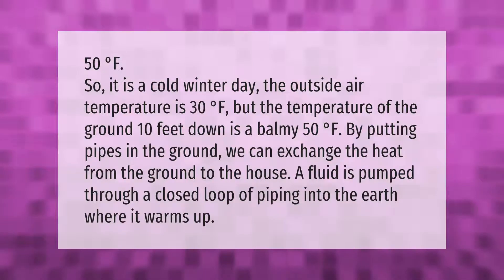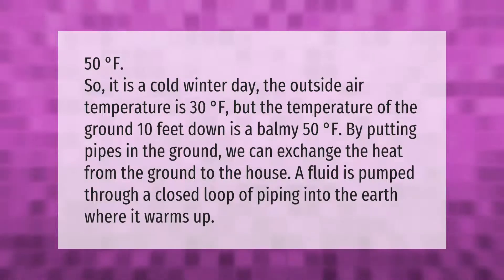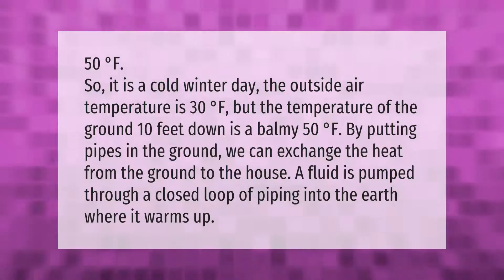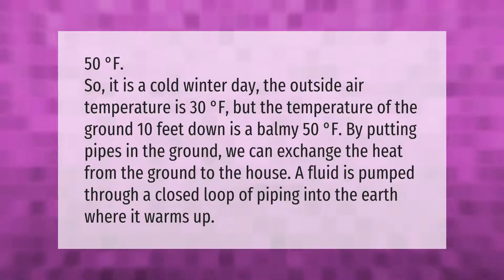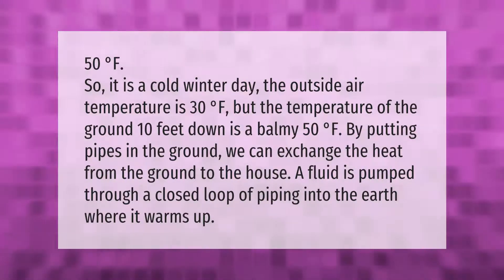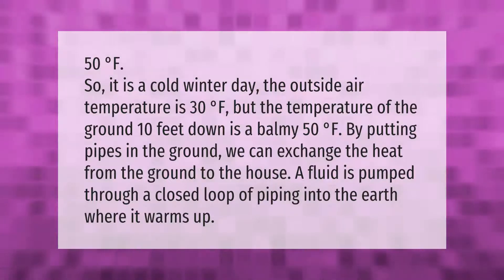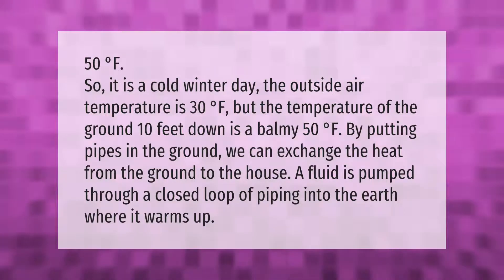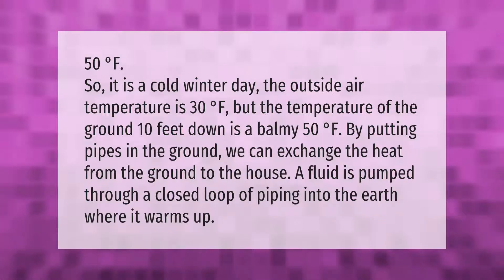It is a cold winter day — the outside air temperature is 30 degrees Fahrenheit, but the temperature of the ground 10 feet down is a balmy 50 degrees Fahrenheit. By putting pipes in the ground, we can exchange the heat from the ground to the house. A fluid is pumped through a closed loop of piping into the earth, where it warms up.